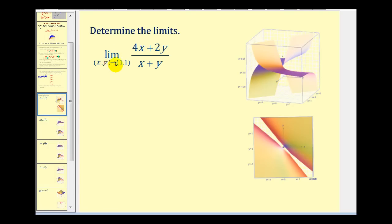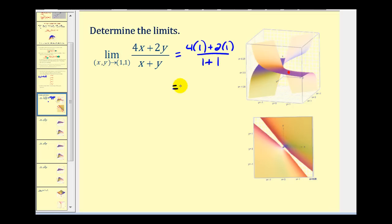Here we have the limit as (x, y) approaches (1, 1) of a function in two variables. Looking at the graph of the surface, we can see there is some discontinuity, but around the point (1, 1) the surface is nice, smooth, and continuous. This is an indication that we can just go ahead and perform direct substitution. Doing so gives us four plus two — that's six — divided by two, which equals three. So as we approach the point (1, 1), the z-value is approaching three.